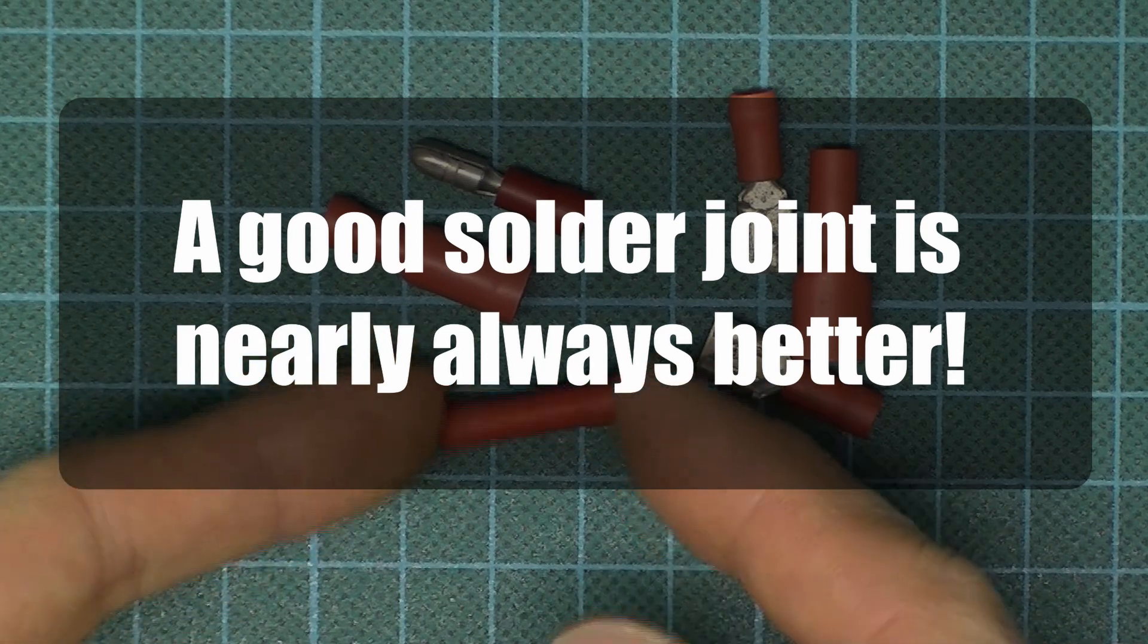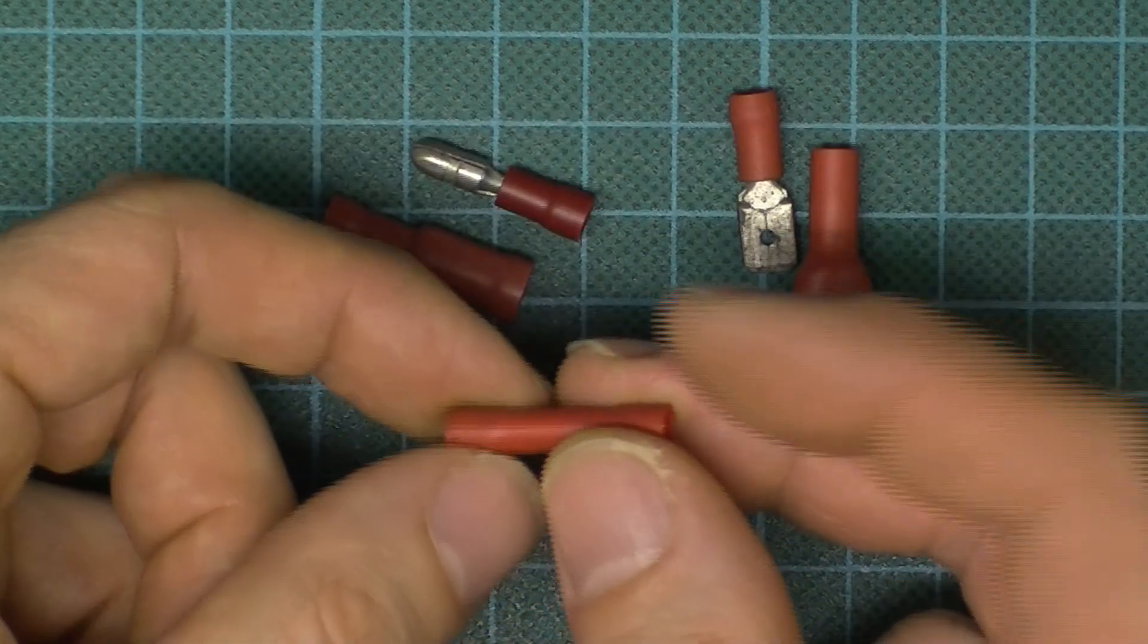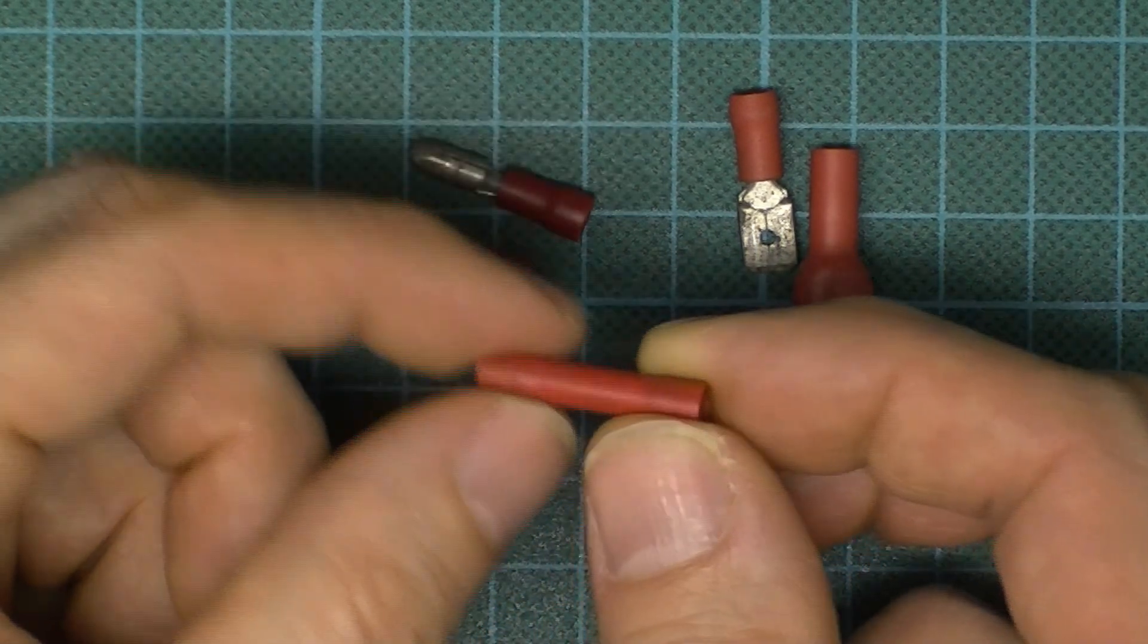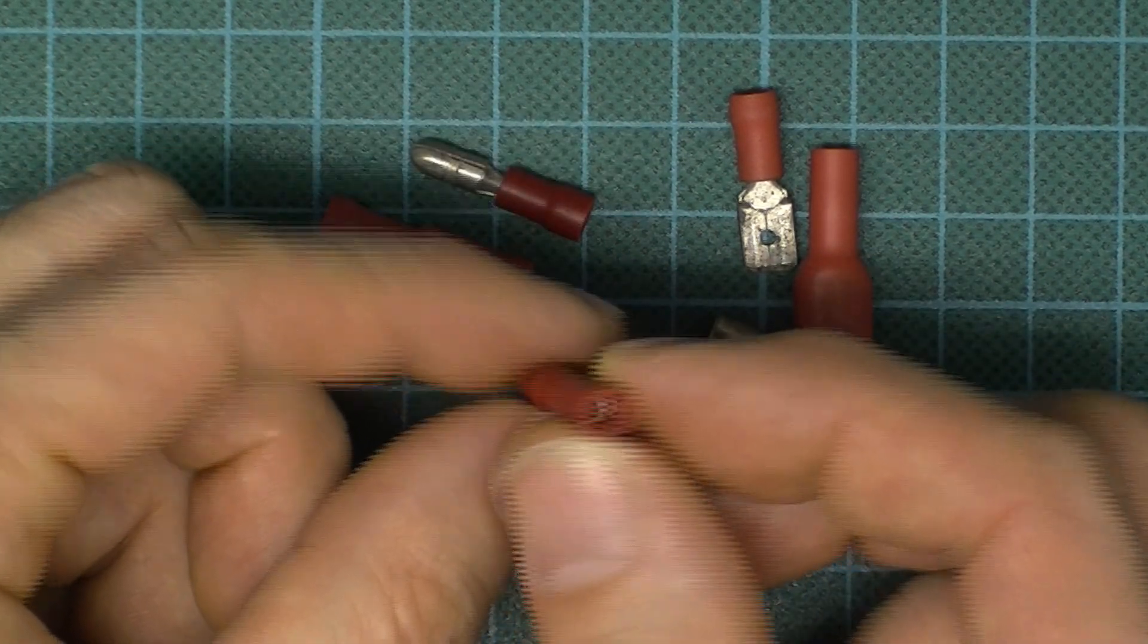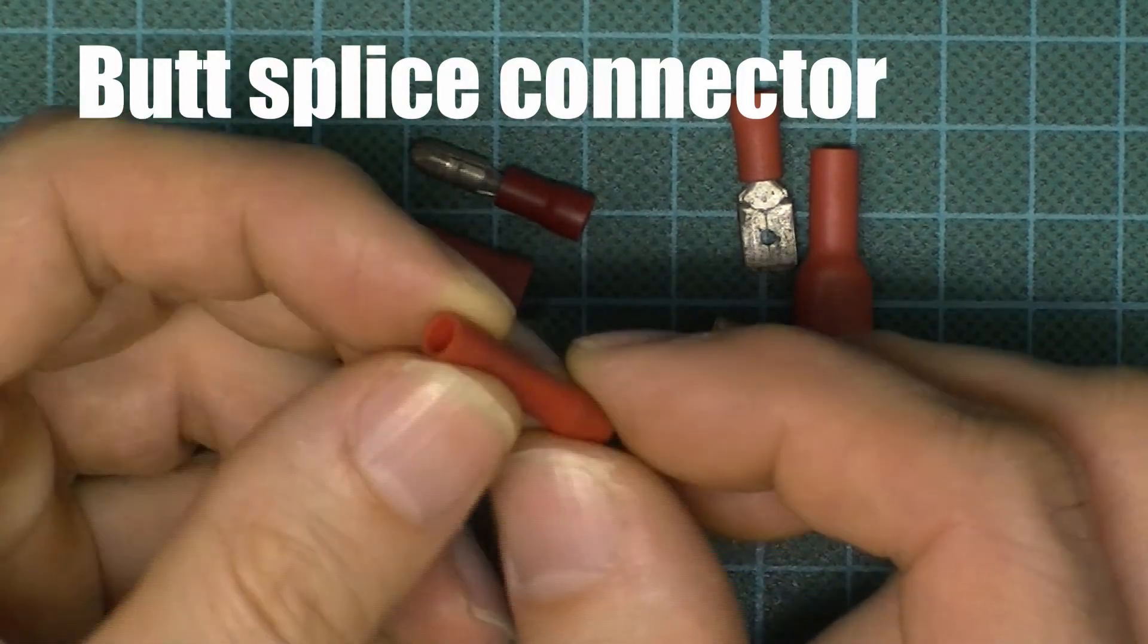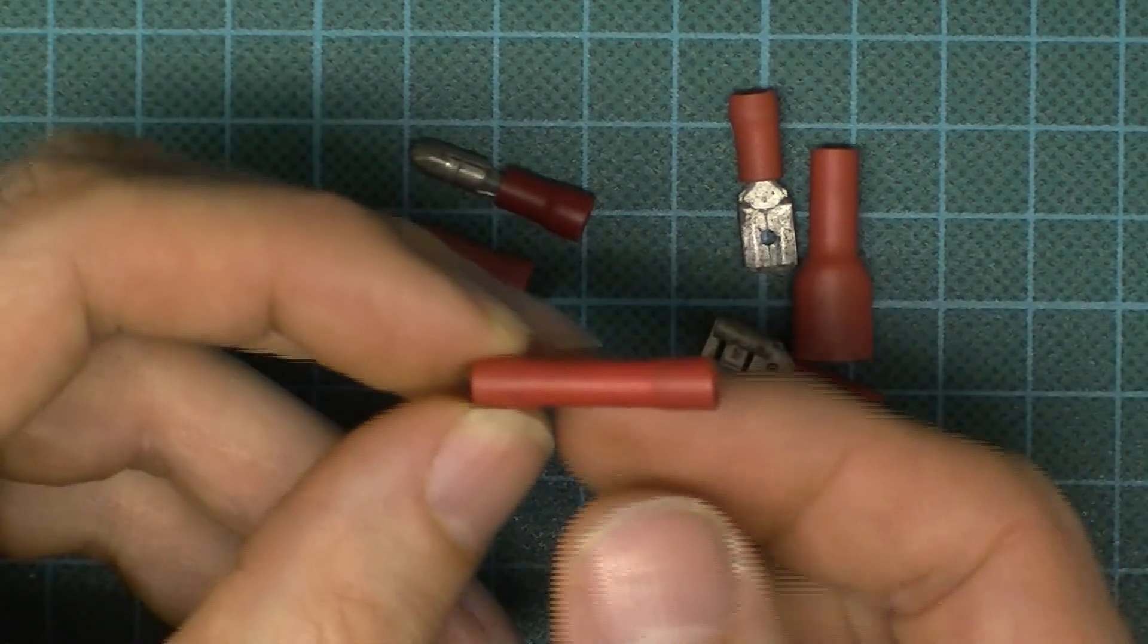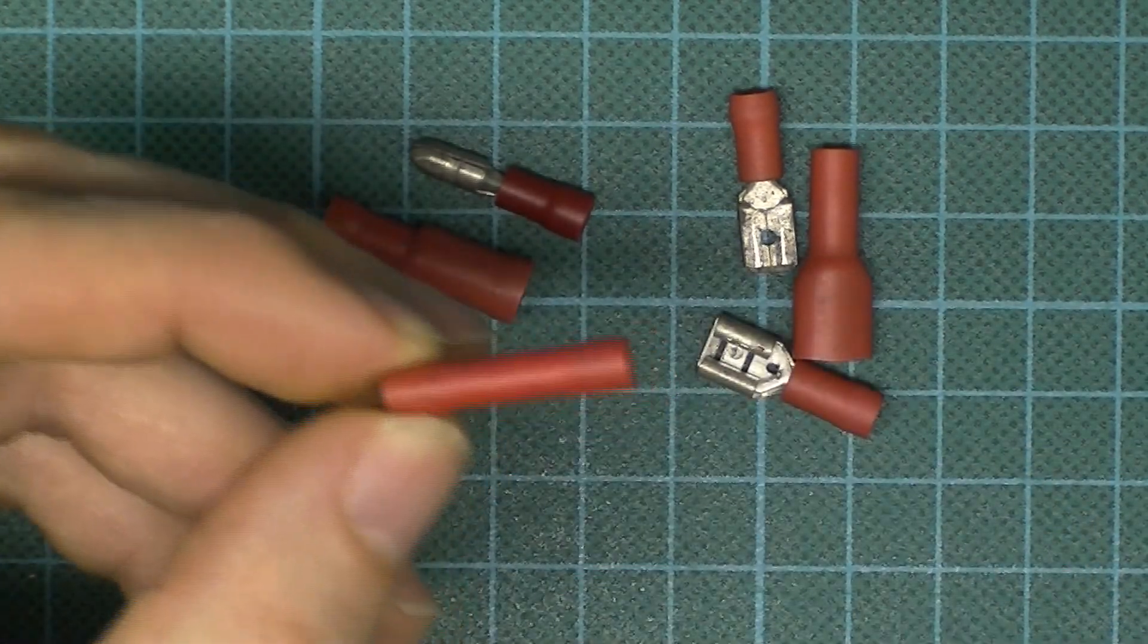But if you don't want to do that, then probably the one I would go for first if you're going to do a permanent connection will be to use a butt splice connector like this. A butt splice connector is a type of crimp connector, so we're going to use a crimping tool something like this.